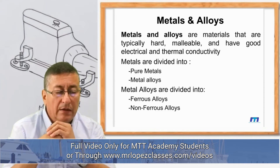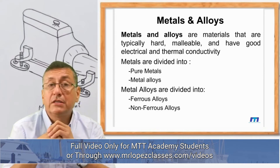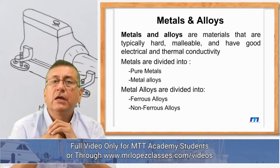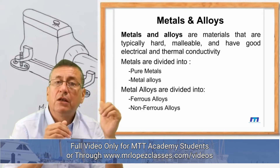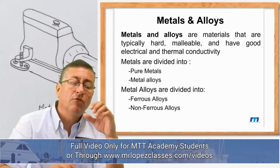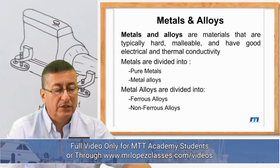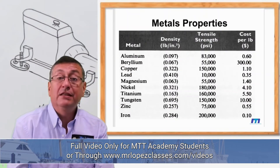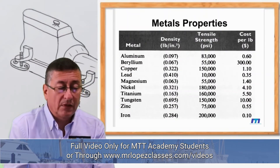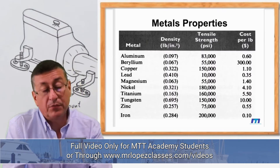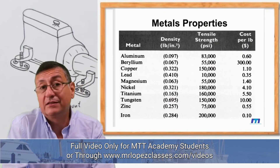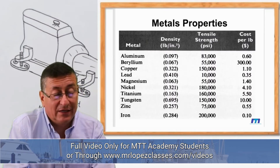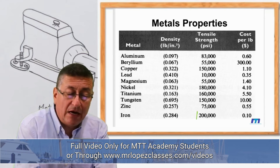Alloys are divided into ferrous alloys and non-ferrous alloys. I love this table because we can use it to analyze the properties of metals — for example, iron is the metal with the highest tensile strength.